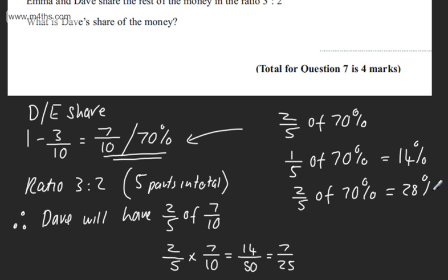So that's another way of doing it. So we could either write it as seven twenty-fifths, as a fraction in its simplest form, or we could write it as twenty-eight percent. So it doesn't matter how much money they have. We're just looking at a fraction or a percentage of the amount.